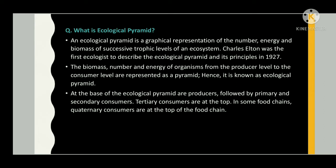What is an ecological pyramid? An ecological pyramid is a graphical representation of the number, energy, and biomass of successive trophic levels of an ecosystem. Charles Elton was the first ecologist to describe the ecological pyramid and its principles in 1927. At the base of the ecological pyramid are producers, followed by primary and secondary consumers; tertiary consumers are at the top. In some food chains, quaternary consumers are at the top.